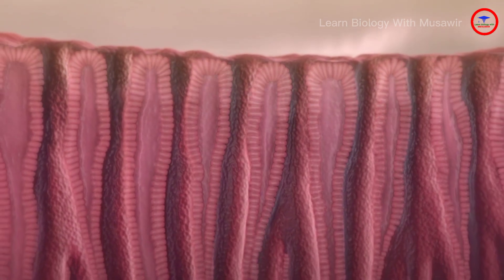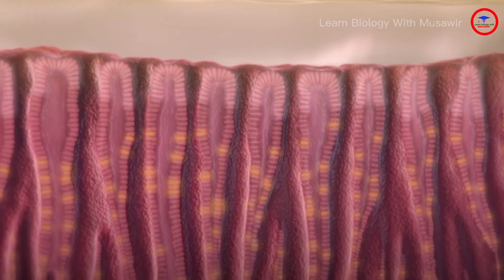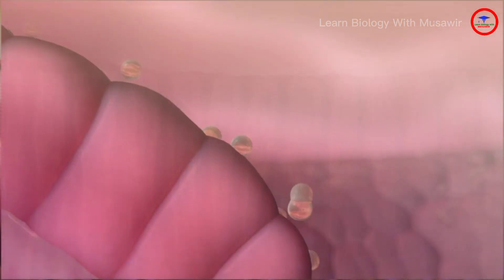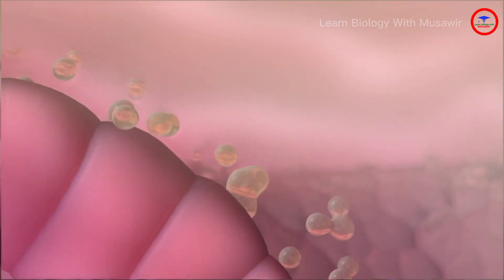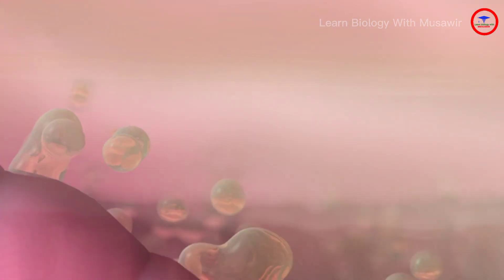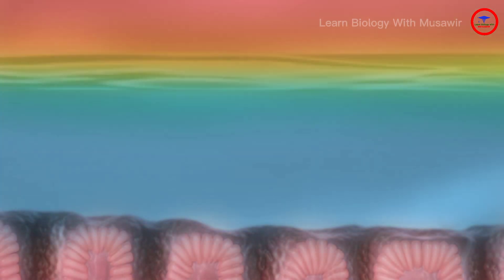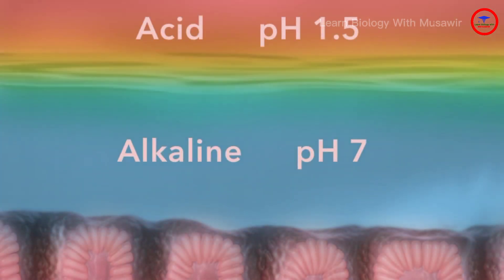Three cell types play important roles to protect the stomach. Surface mucous cells at the top of the pit secrete a bicarbonate mucous that neutralizes hydrochloric acid before it can contact the stomach lining.